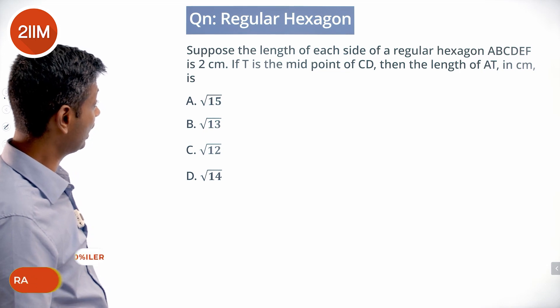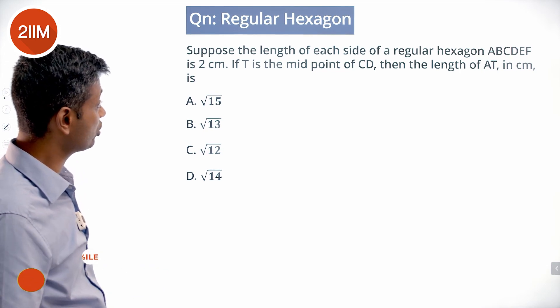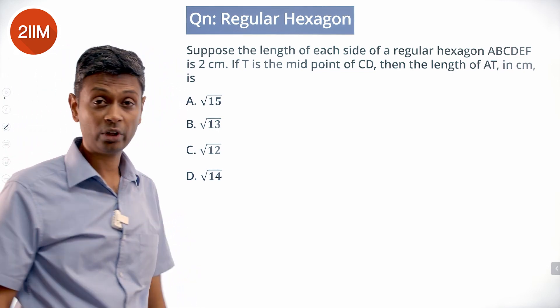Suppose the length of each side of a regular hexagon ABCDEF is 2 centimeters. If T is the midpoint of CD, then what is the length of AT in centimeters? Excellent question.